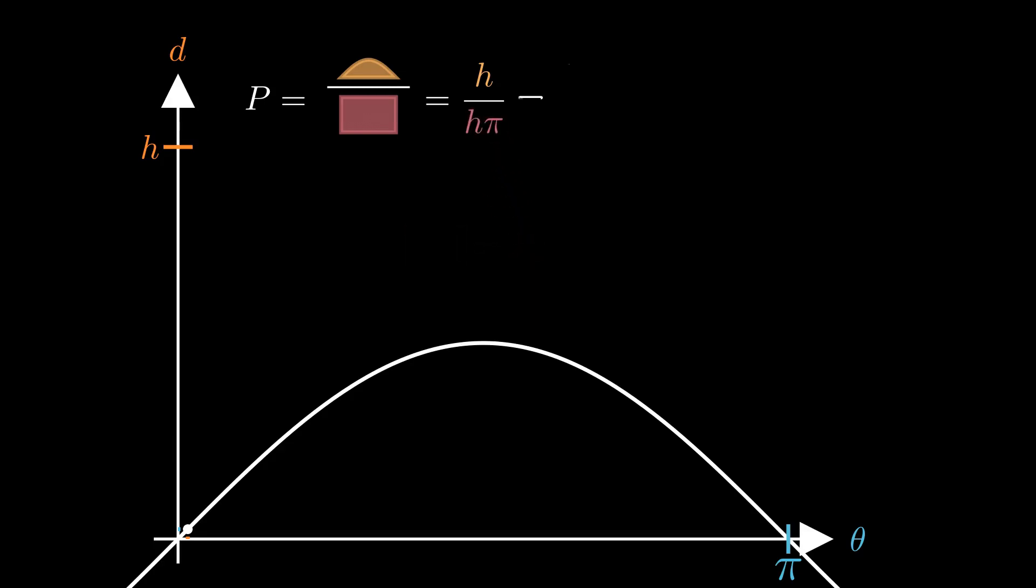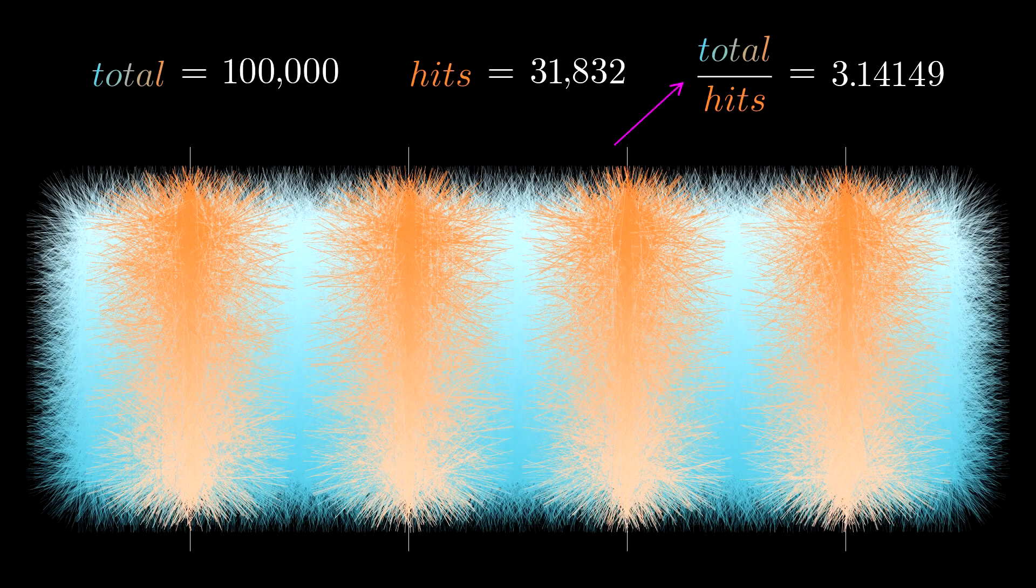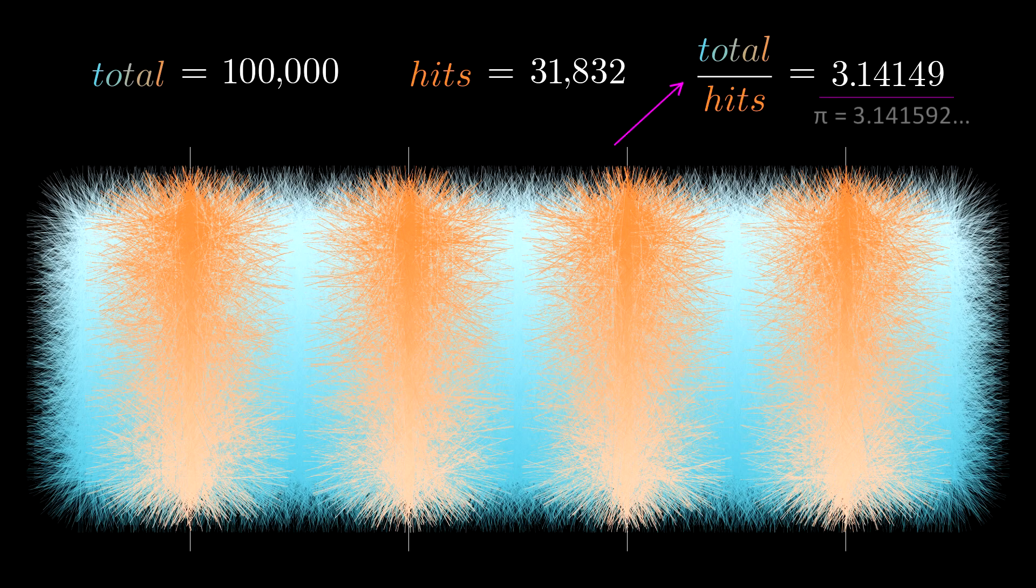So the probability is equal to 1 over pi, therefore 1 divided by this probability is pi. This is why the total number of needles divided by the number of hits approaches pi.